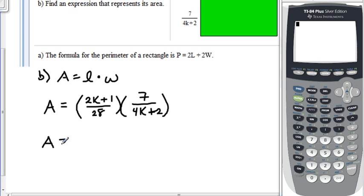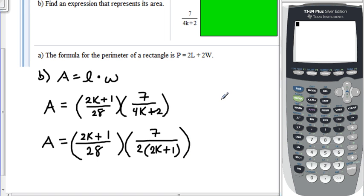Let's write A equals, we still have 2K plus 1 over here, over 28, times 7 over 2, and then in parentheses, 2K plus 1. At this point, what we'd like to do is factor out as much as possible. As you can see, we have 2K plus 1 here in the numerator. That is going to cancel out with 2K plus 1 here in the denominator. We have a 7 in this numerator and a 28 in this denominator. This 7 will become a 1 and this 28 will become a 4.